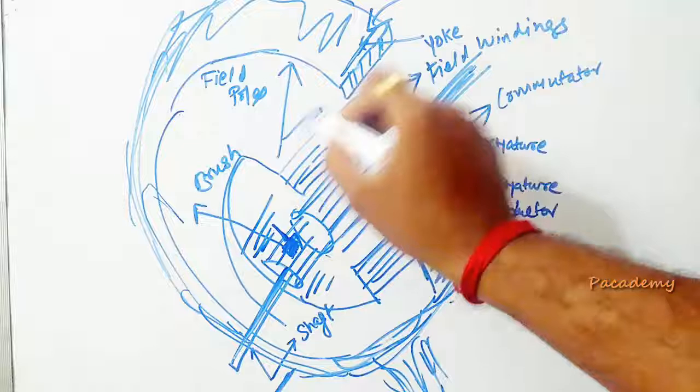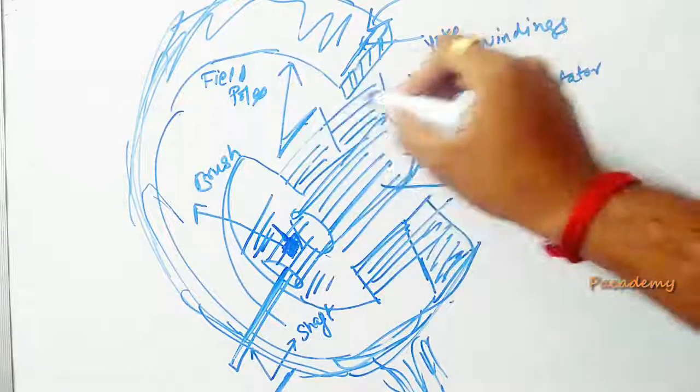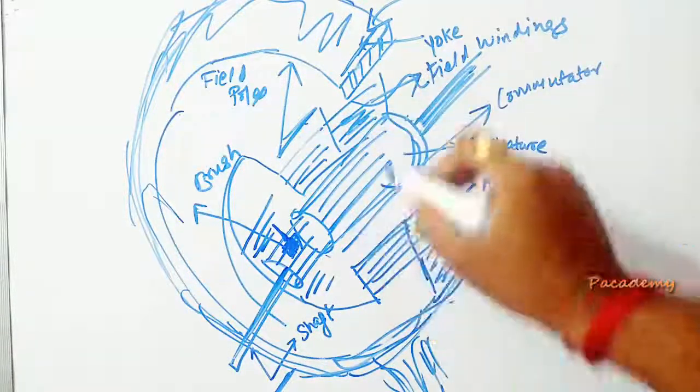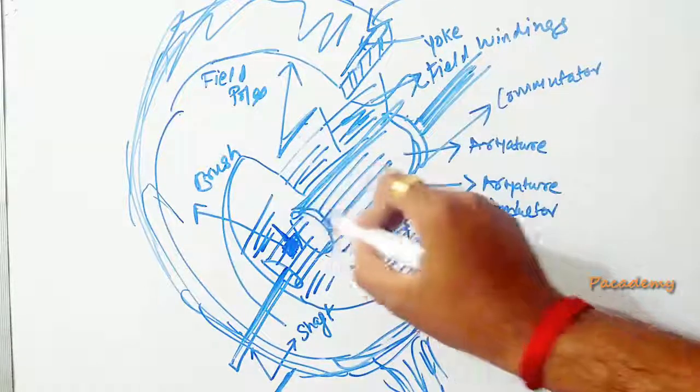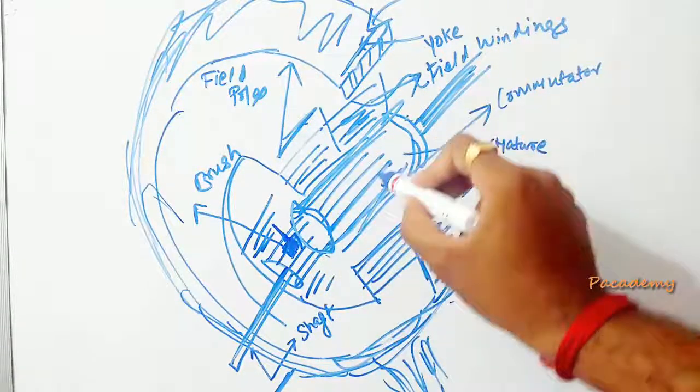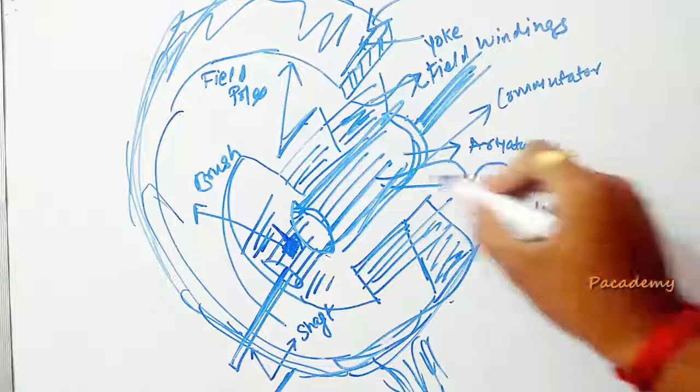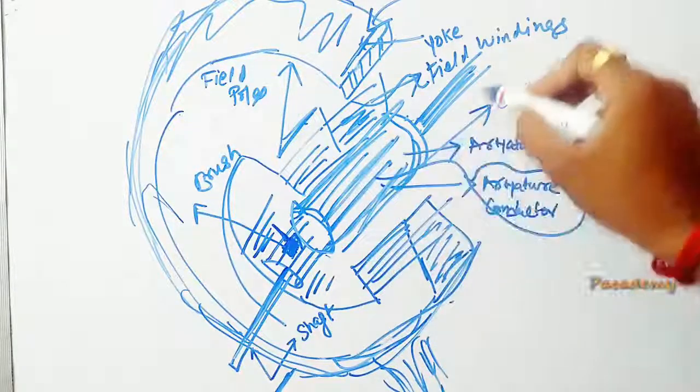Then there are field poles and the field windings are wound on the field poles. And then there is an armature core on which the armature conductors are wound. These are the armature conductors.